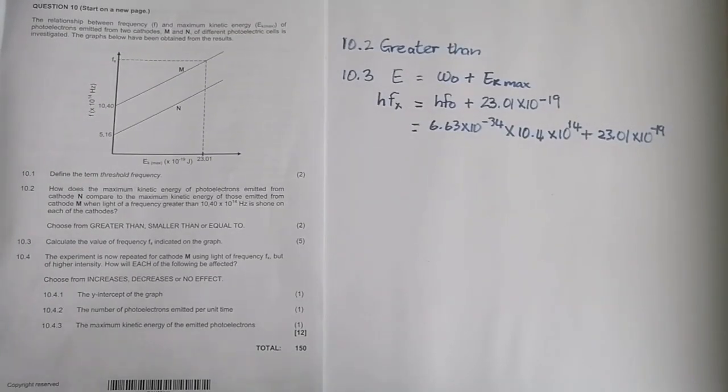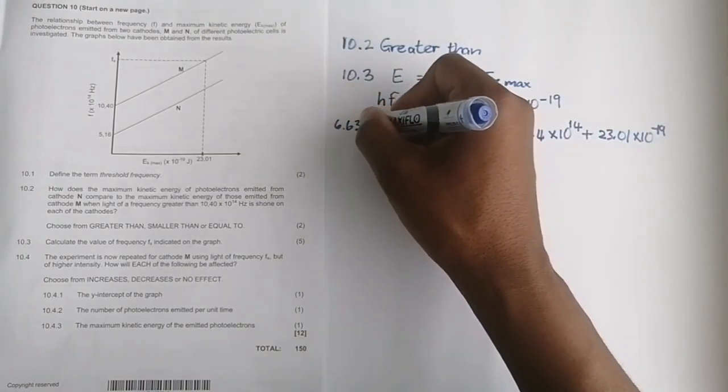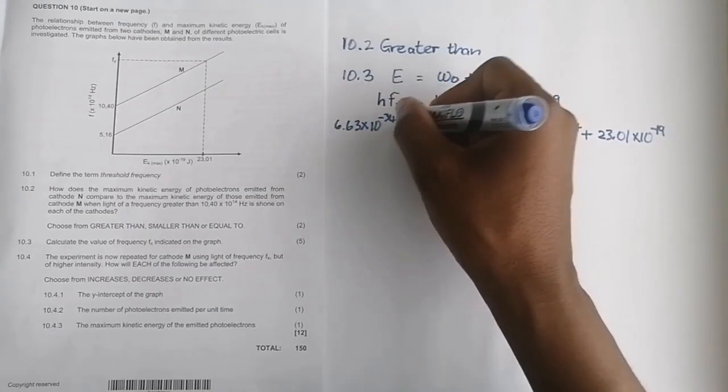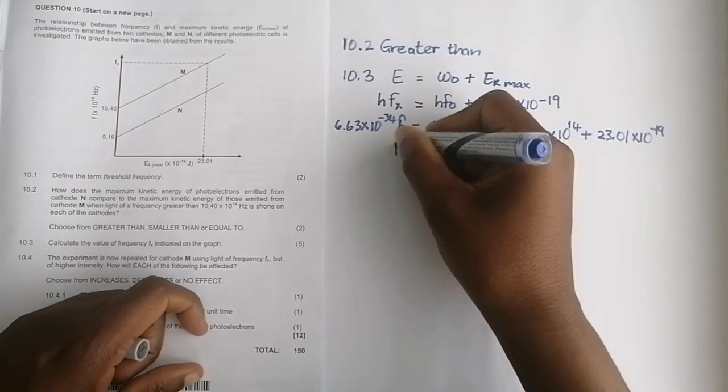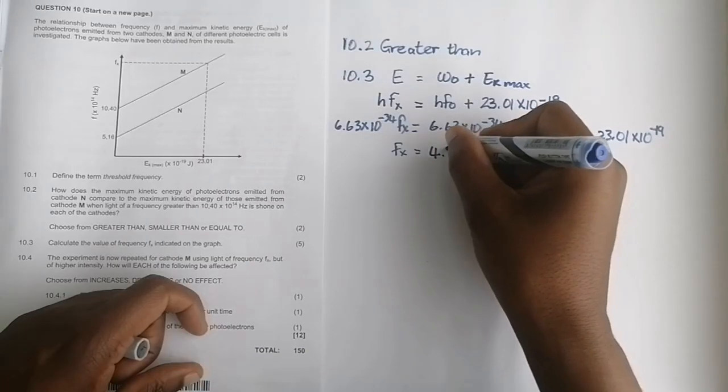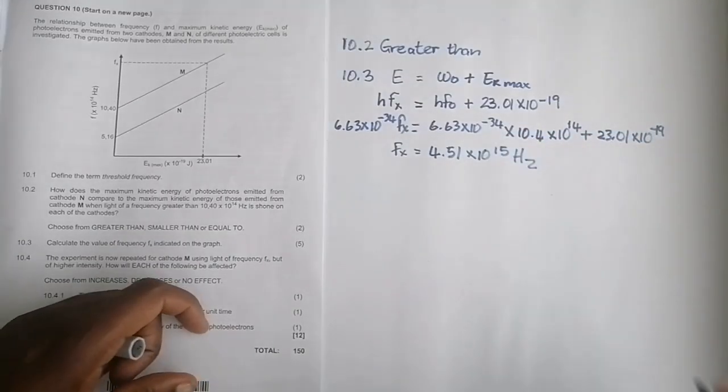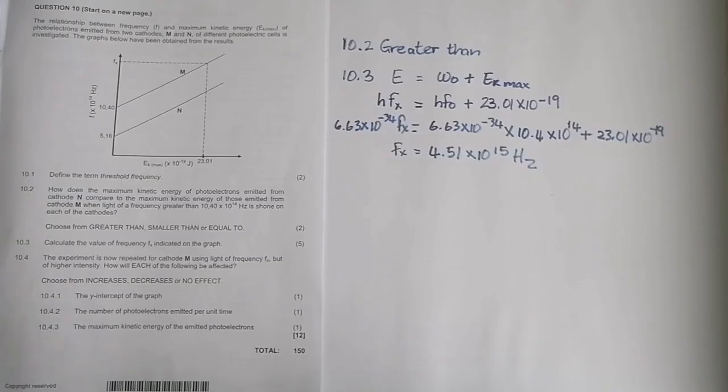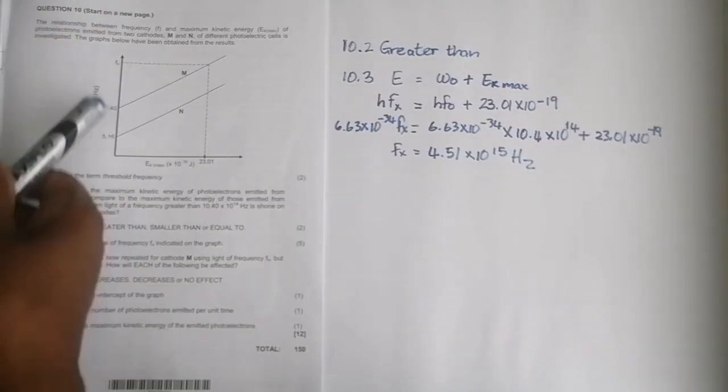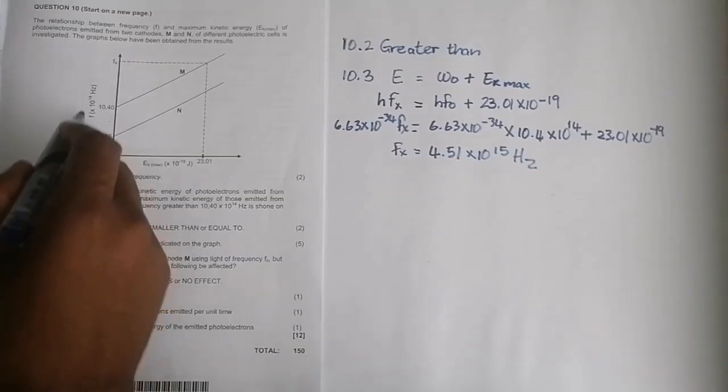We can calculate that. If we wanted to substitute on the other side, we still have 6.63 × 10^-34 multiplied by fx, so we're going to get that and divide by that value. I find the final value of fx to be 4.51 × 10^15 hertz. You can verify that answer. It would actually make sense that it should be higher than that value there—that's 45.1 × 10^14 if you wanted to look at it that way.